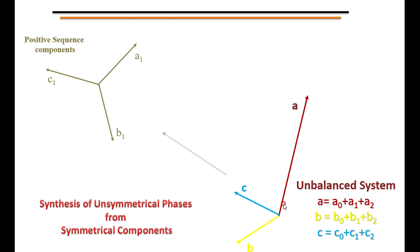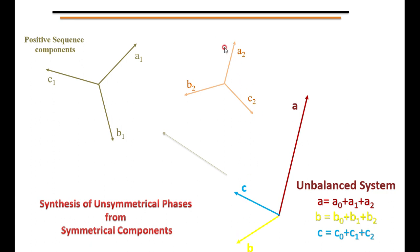The next component extracted from the unbalanced phasor is the negative sequence component — A2, B2, and C2. These are the negative sequence components of phases A, B, and C. Once again, A2, B2, C2 have equal magnitude and phase displacement of 120 degrees. But the phase sequence is opposite to the original: here it is A, C, B, whereas the original is A, B, C. This is what we call the negative sequence component.